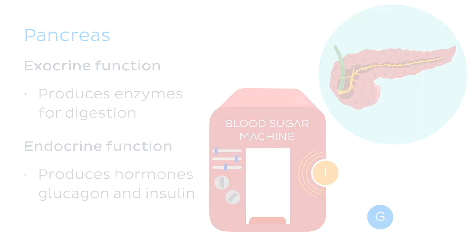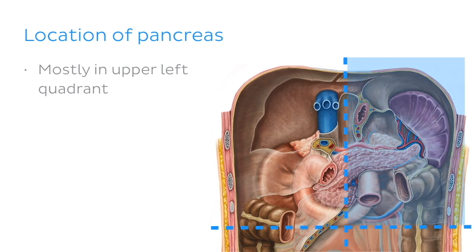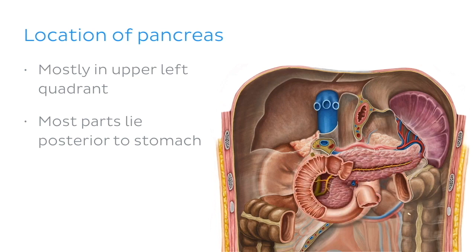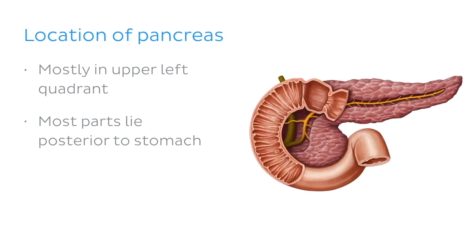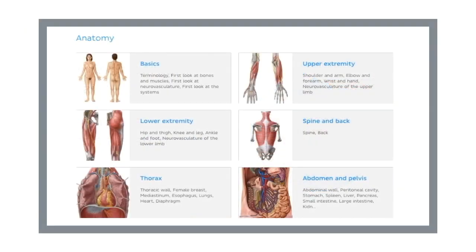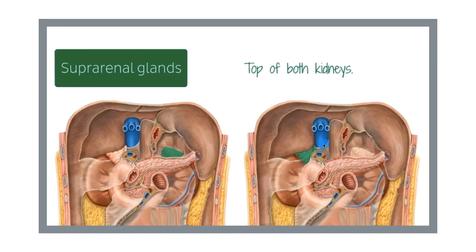The pancreas is mostly contained in the upper left quadrant of the abdomen. Most of its parts lie posterior to the stomach, which has been removed in this image. In today's tutorial, we'll focus on the pancreas and the part of the small intestine related to it, the duodenum. If you would like to explore the anatomical relations of the pancreas in greater detail, be sure to check out our video on this topic.